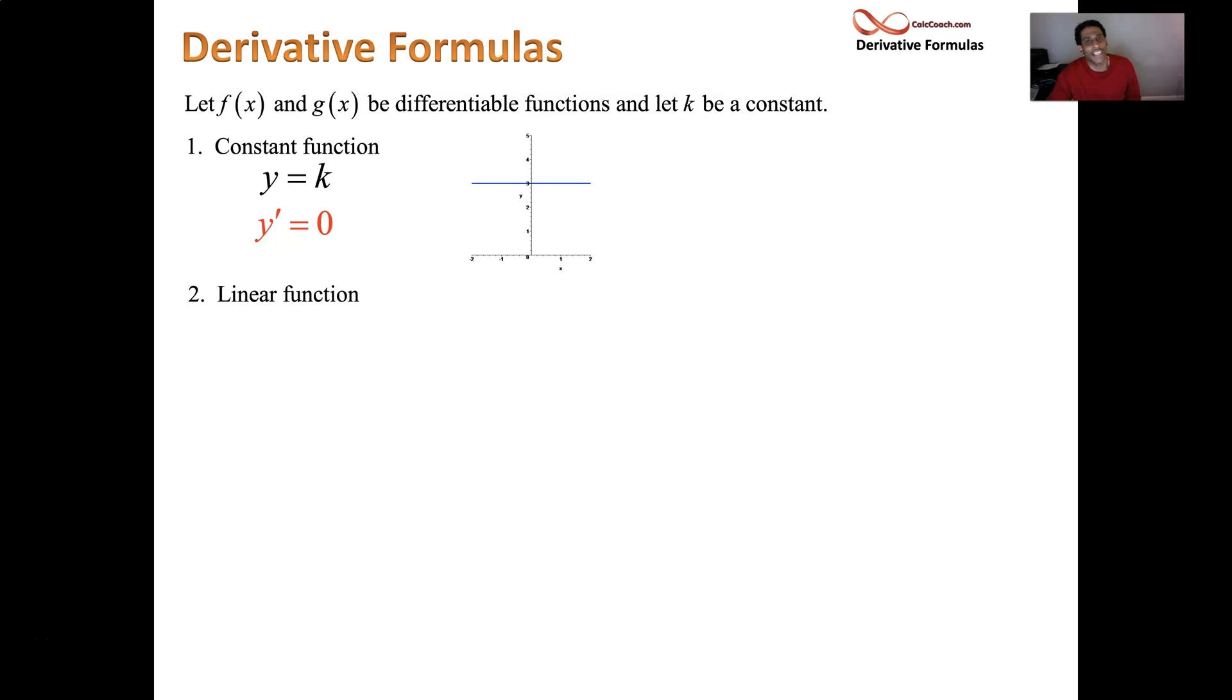Next up, a linear function. That's not one of those horizontal guys. So just in general, y equals mx plus b, we have a line. Once again, the tangent line and the actual line coincide. The slope of the tangent line matches the slope of the line. Well, the line slope is m. Therefore, if you have a line, y equals mx plus b, its derivative is m.